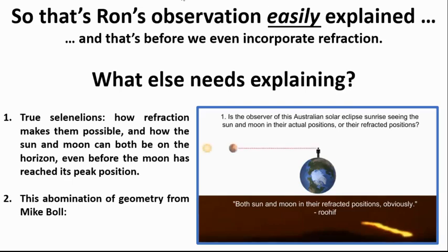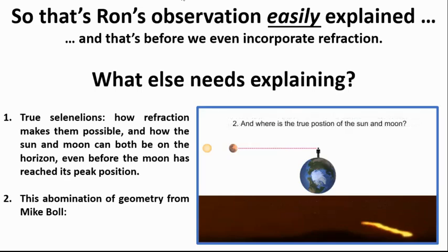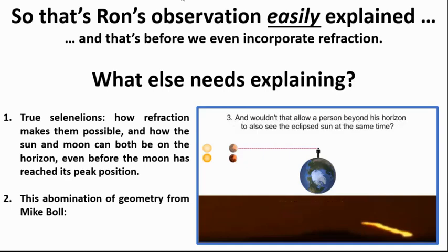Let's draw it that way, and as you can see in the image below, the refracted moon is clearly eclipsing the refracted sun. And where is the true position of the sun and moon? Ruhif says below his horizon. Yep, that's what your model says, so let's draw that in. And wouldn't that allow a person beyond his horizon to also see the eclipse sun at the same time? No, but let's leave that until the next video.